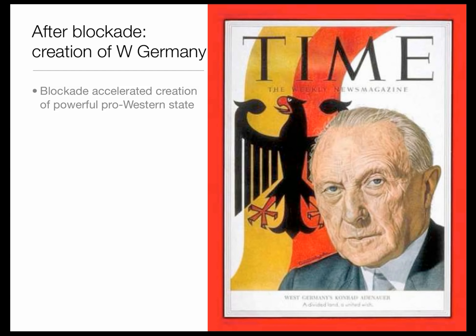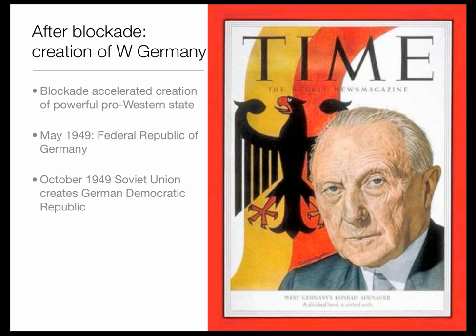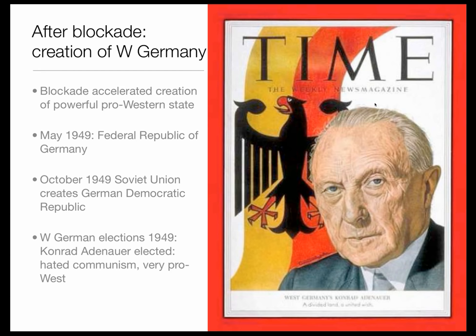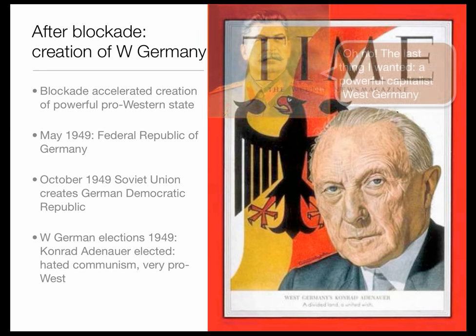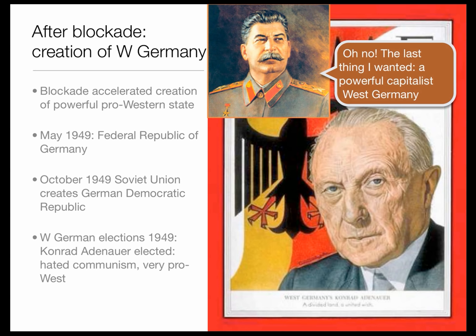It accelerated the creation of a strong, very pro-Western West German state. After all, the West had shown it was willing to defend West Germany against communism. In May of 1949, West Germany — the Federal Republic of Germany — was formed. In October of 1949, the Soviet Union created the German Democratic Republic, which had actually got a lot less democracy, being essentially a Soviet satellite state. West German elections were held in 1949 and Conrad Adenauer — seen on the cover of Time magazine — was elected. He hated communism and was very pro-West. So the very thing Stalin didn't want — a powerful, capitalist, pro-American West Germany — was created.